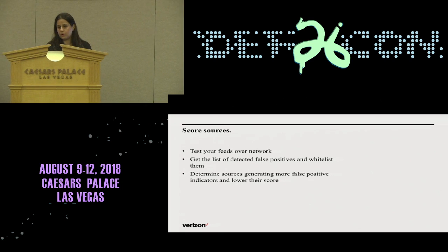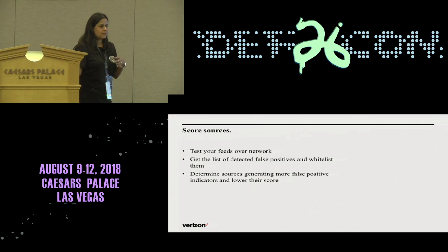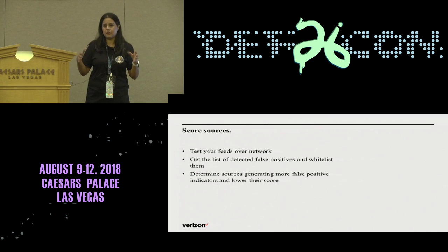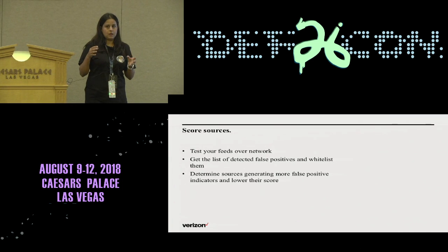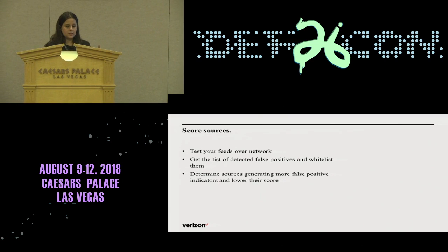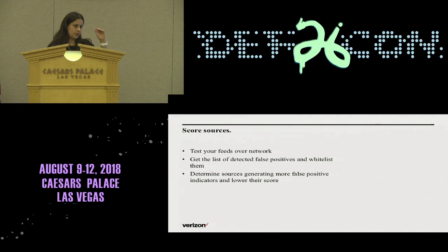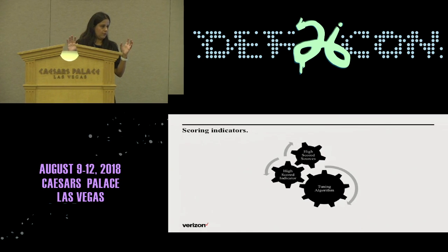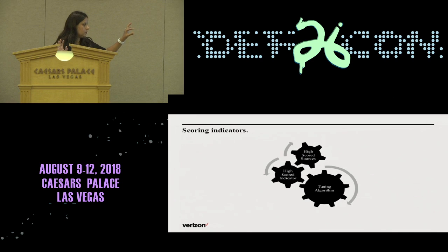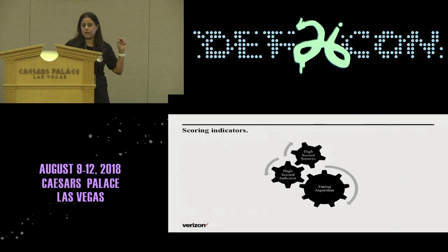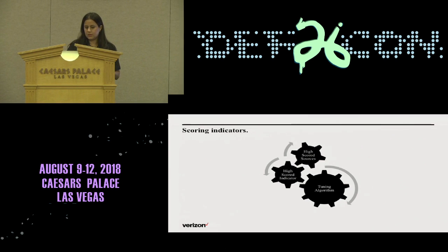The score of sources is also important. Check the alerts being generated and the number of false positives you're getting from different sources — have statistics. A test framework is needed if you want to analyze the sources and their scores. The ones that are noisier and generating more false positives need to be scored lower, and the ones that are more reliable need to be scored higher. The results you get today may be different one week from now, so you need an automated way of getting these scores and tuning the algorithm to give you the right results.